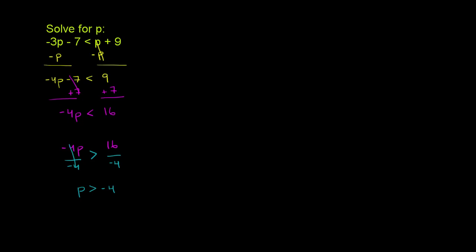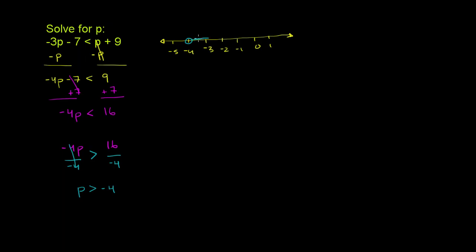We can plot this solution set on a number line and try out some values to feel good about it. So we have negative 5, negative 4, negative 3, negative 2, negative 1, 0, and then we can keep going to the right. Our solution is p is greater than negative 4 — not greater than or equal — so we have to exclude negative 4. Negative 3.99999 will work, but negative 4 will not.